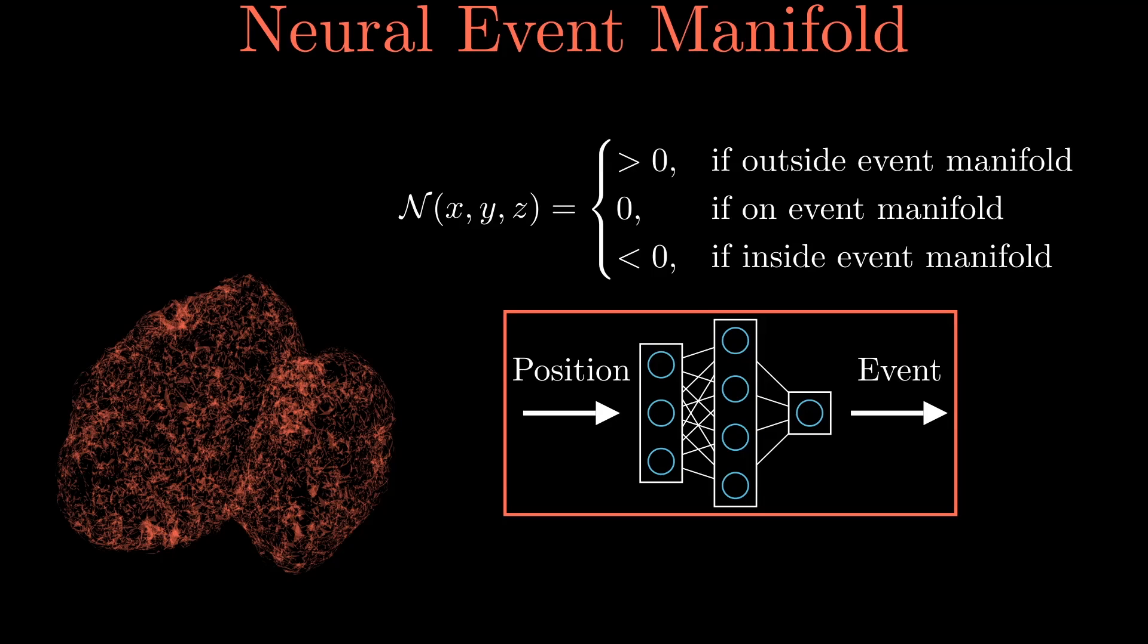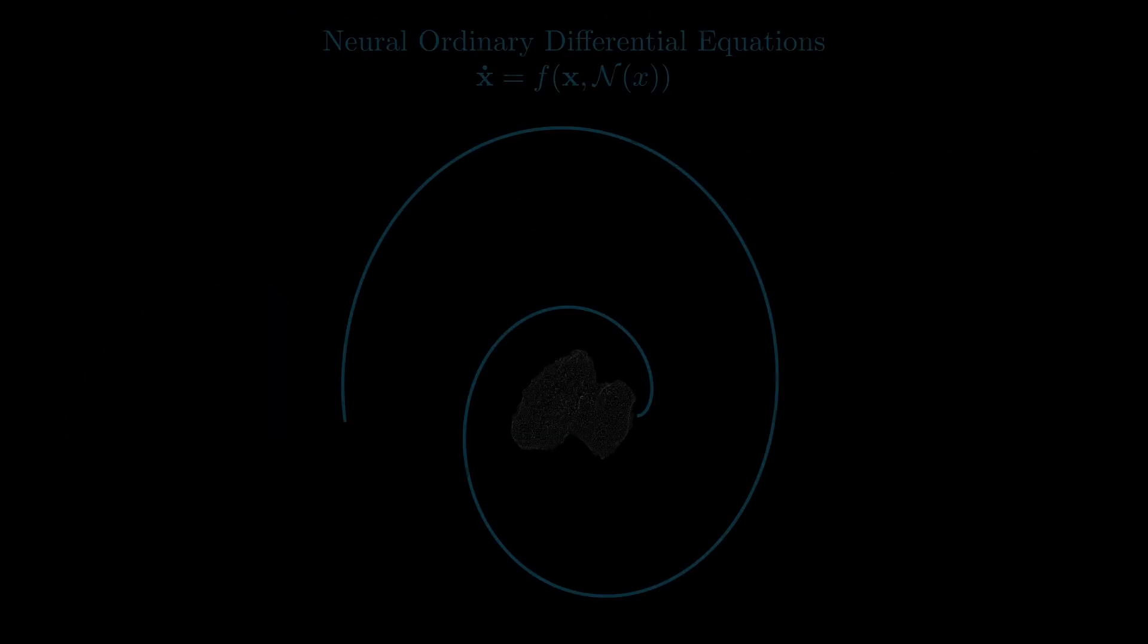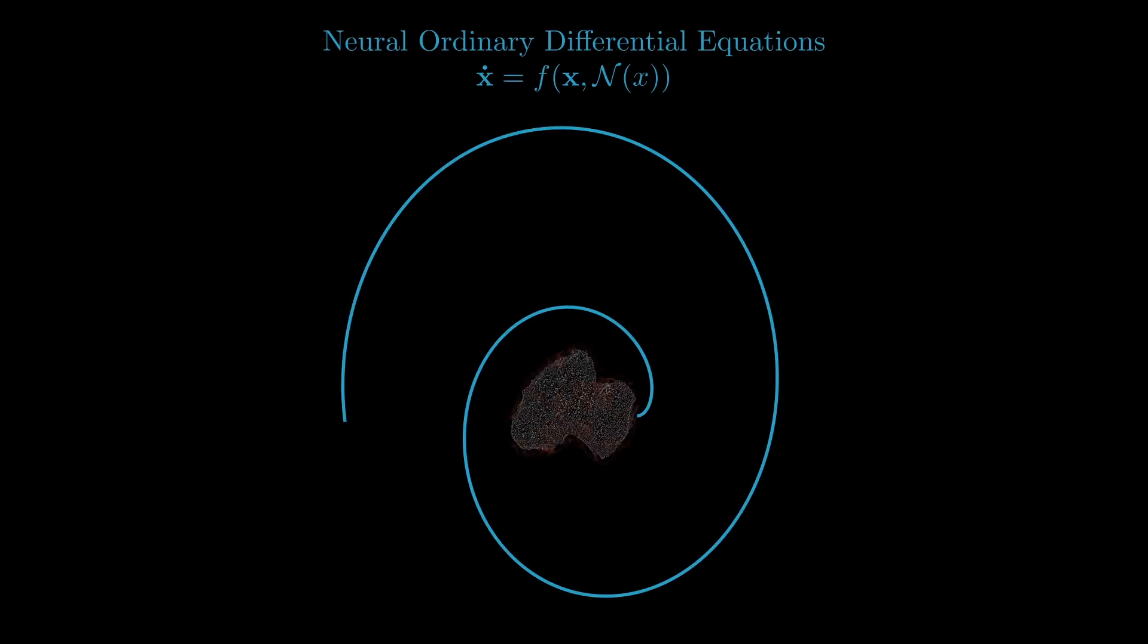Note that the event manifold does not need to be represented by a neural network for our methodology to work. It can be any function of the state. We can now construct our event transition tensors for our system. These tensors allow us to rigorously analyze the performance of our GNCnet at the event.